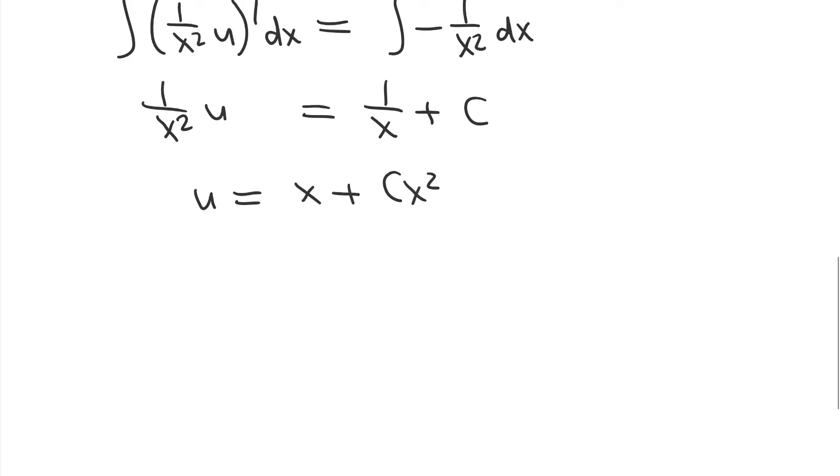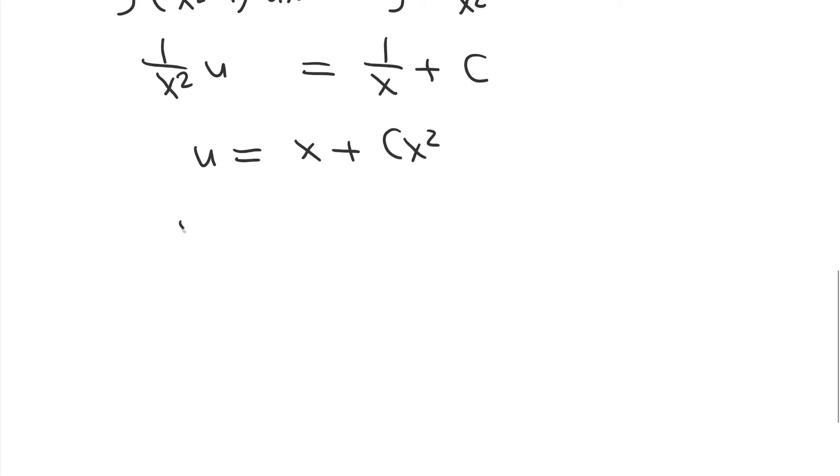But I want my solution to be for y in terms of x, not u. So I'm going to substitute back in u is equal to y to the negative 1 third. And then finally, I'm going to raise both sides to the negative 3 power. So I get y on the left-hand side. And raising the right-hand side to the negative 3 power is the same as 1 over the positive 3 power.